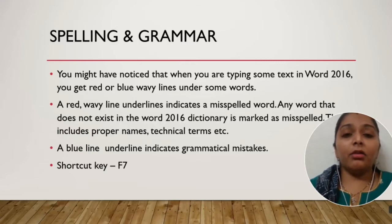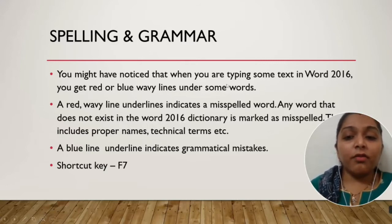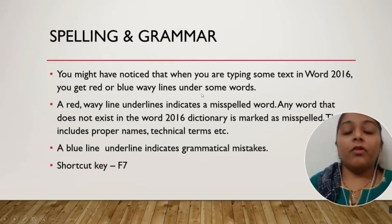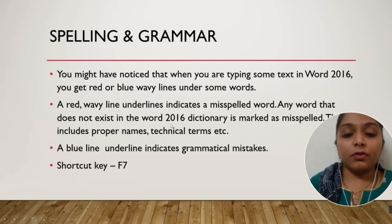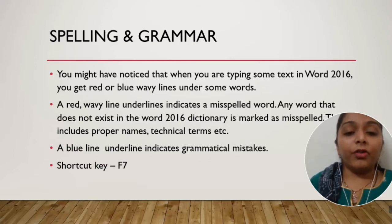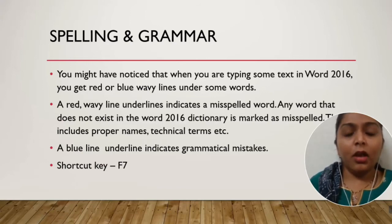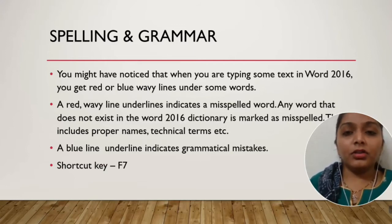Today in Chapter 3, we are first going to learn spelling and grammar. You might have noticed that when you are typing some text in Word 2016, you get red or blue wavy lines under some words. A red wavy line indicates a misspelled word — any word that does not exist in the Word 2016 dictionary is marked as misspelled. This includes proper names, technical terms, etc.